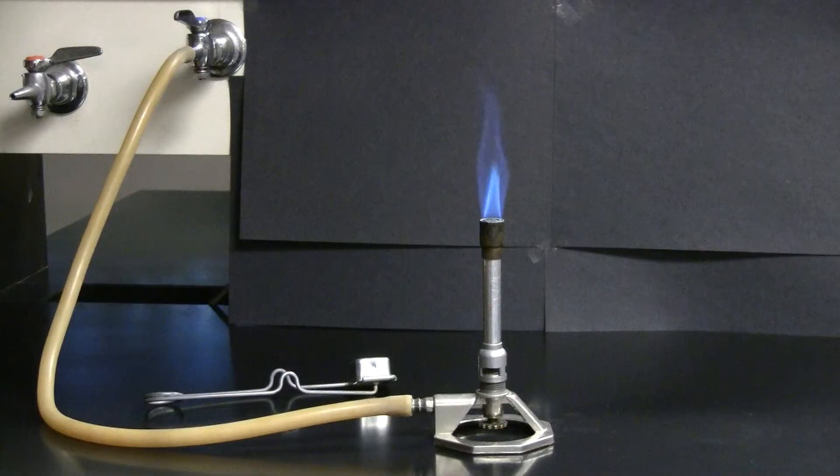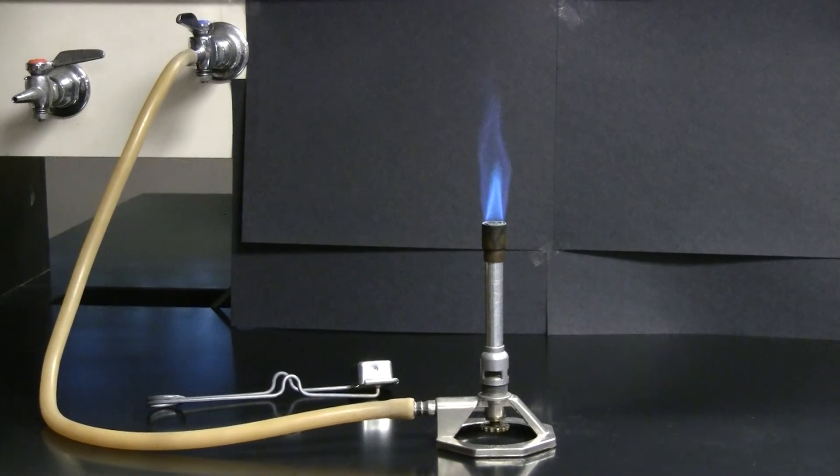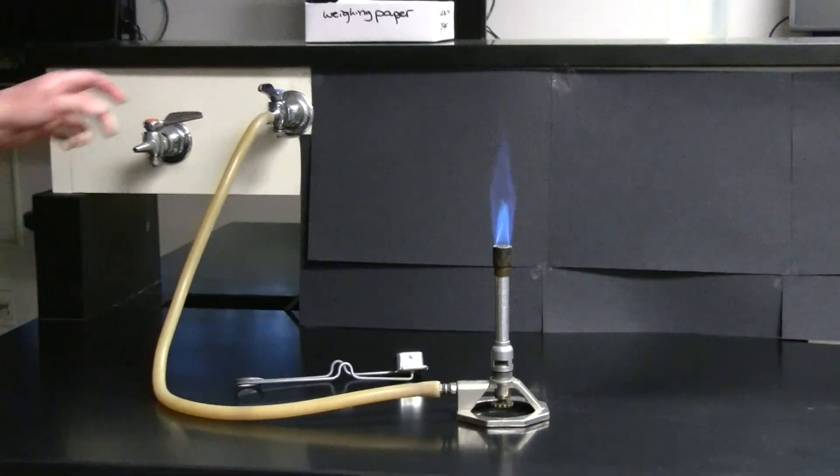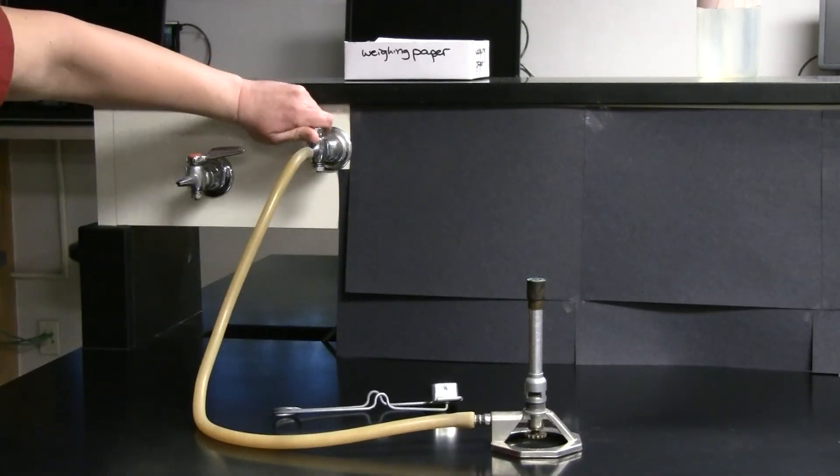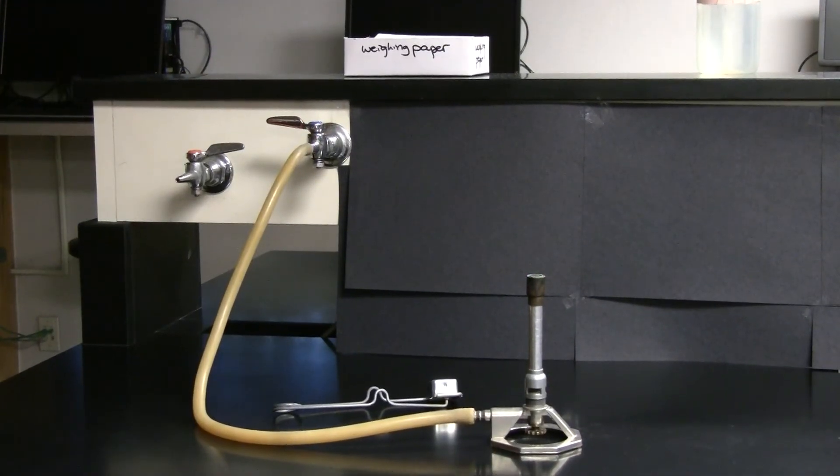Finally, when you are done using the Bunsen burner, turn off the Bunsen burner by turning off the gas valve at the bench. Wait for your Bunsen burner to cool and then close both the air inlet valve and the gas valve before putting it away.